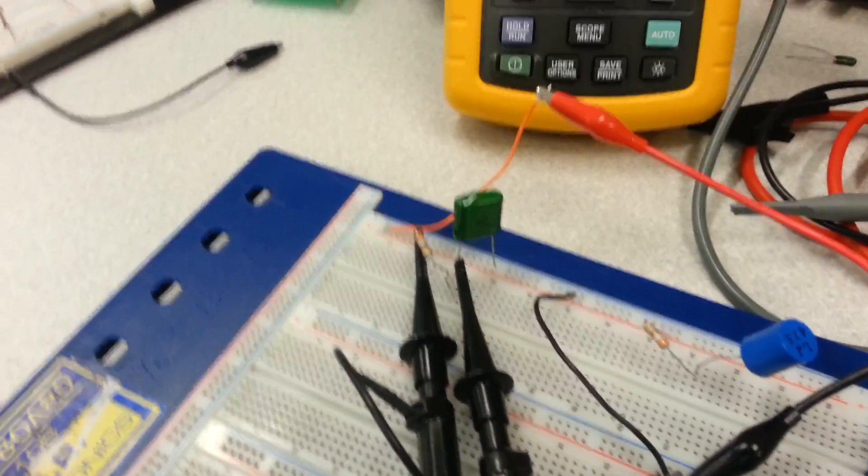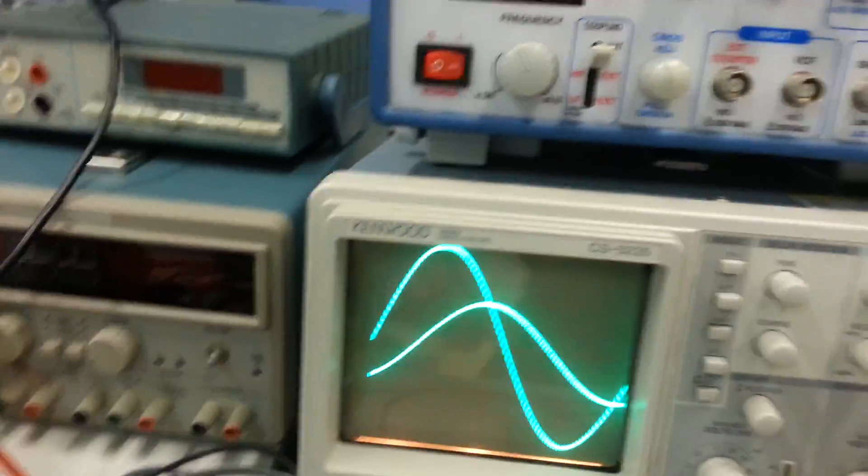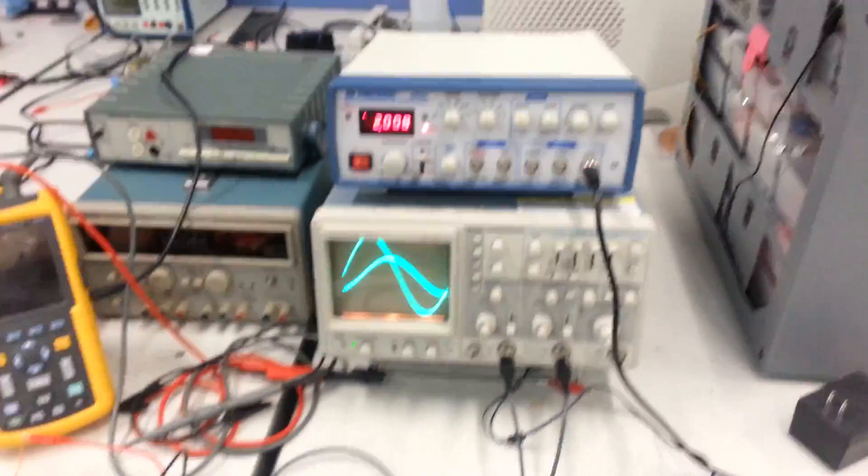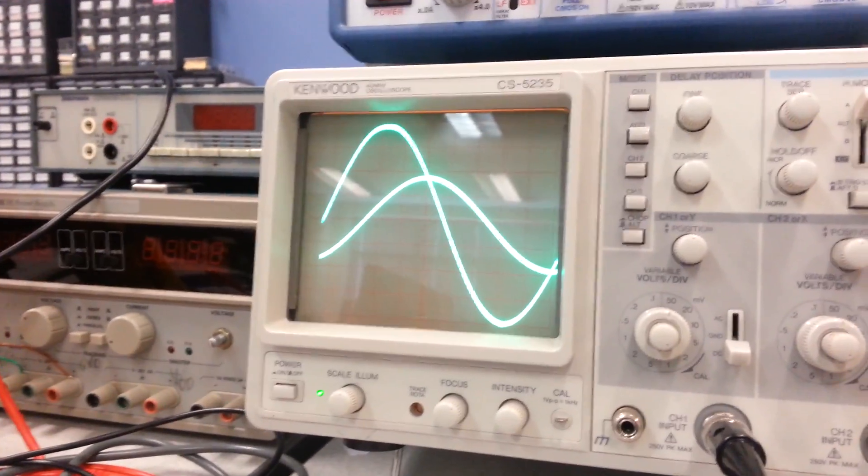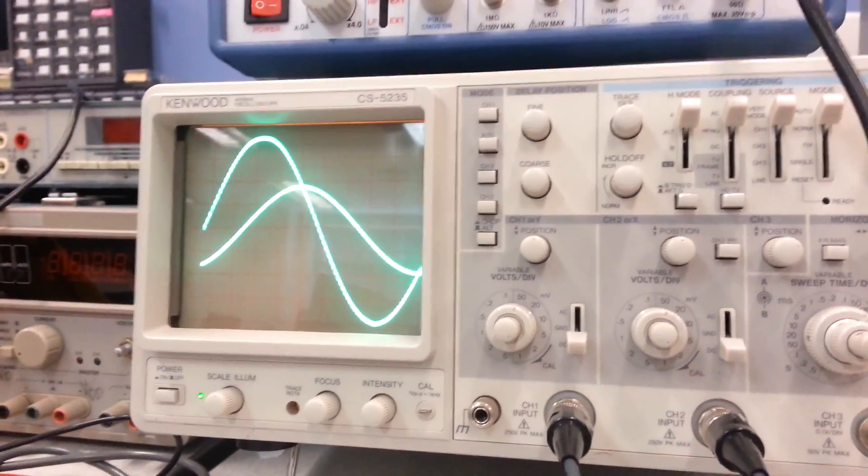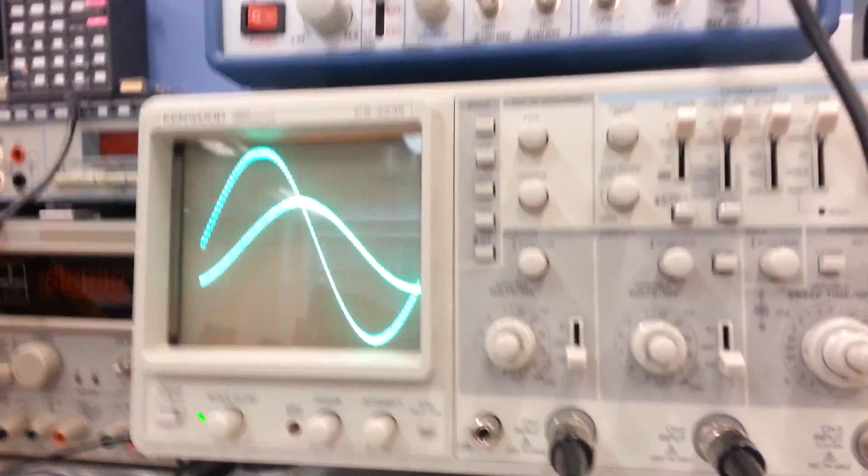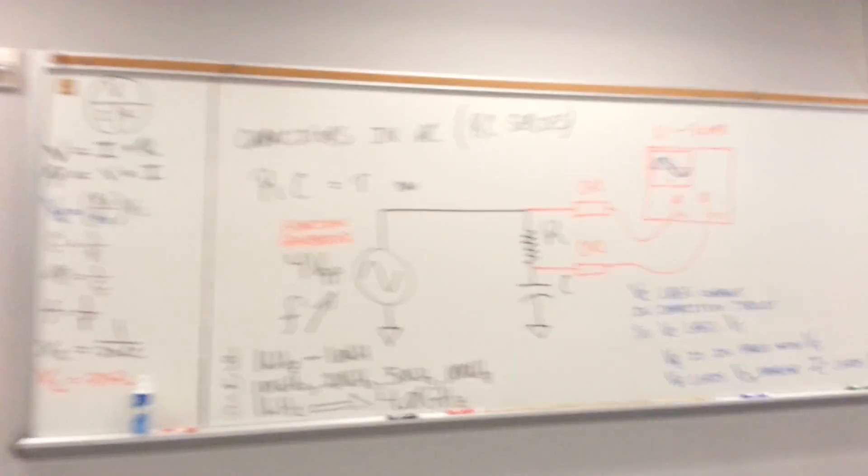This is just a series RC circuit and channel one on the scope is measuring the source voltage. Channel two on the scope is measuring the voltage across the capacitor. This is the circuit that you're looking at.